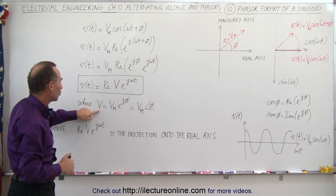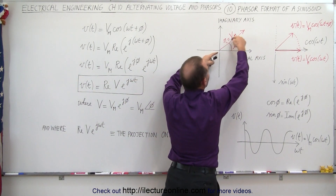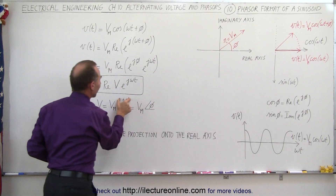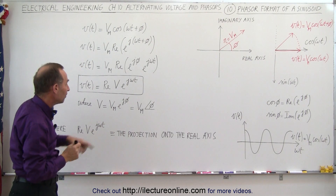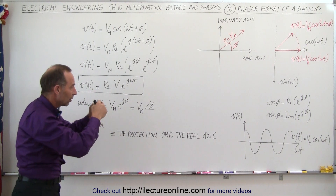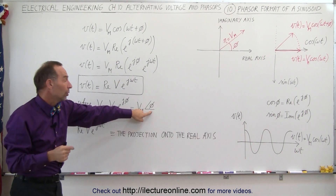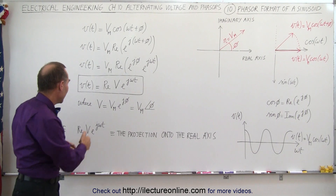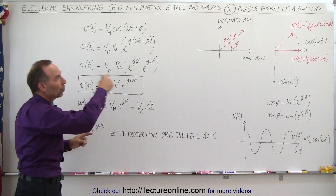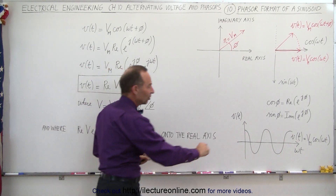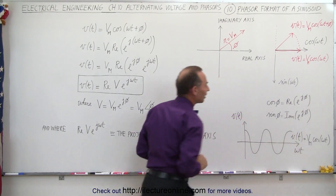We have the portion right here which represents the maximum value or the magnitude of the phasor. Then we take into account that there's a phase angle potentially relative to where the phasor would be when time is equal to zero. That gives us the magnitude of the phasor and the angle where it's located at t equals zero. Then we multiply by e to the j omega t, giving us the constantly rotating phasor, which represents the voltage as a function of time.